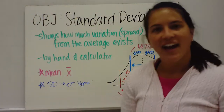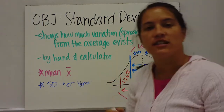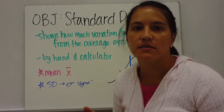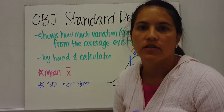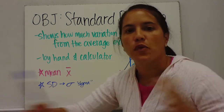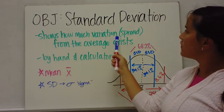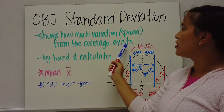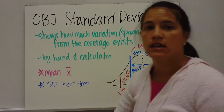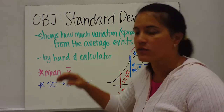Today's objective is standard deviation. This is a measure of spread — one of the statistics that tells us about the spread or variation of data. Standard deviation shows how much variation from the average exists, and it uses the mean.